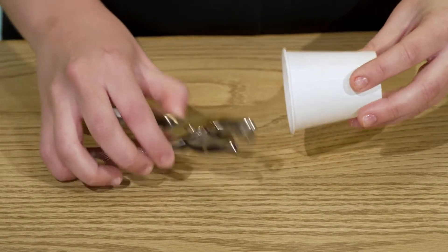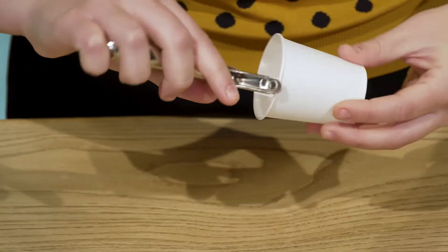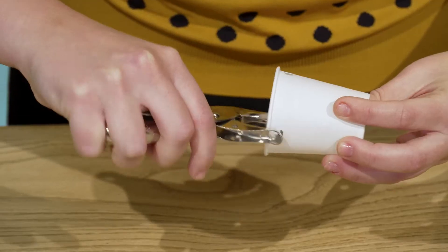First, take one of your paper cups and punch four holes just below the rim. Space the holes out equally around the cup so two pairs of holes are opposite each other.